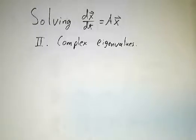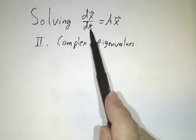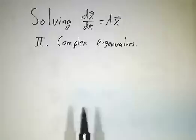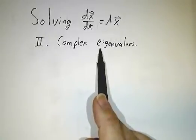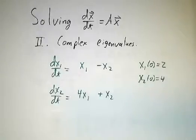In our last video, we studied systems of linear differential equations. Derivative of a vector is some matrix times that vector, and we studied the case where all the eigenvalues of the matrix were real. In this video, we're going to study the case where some of the eigenvalues are complex. And actually, we're going to do a 2 by 2 system where both eigenvalues are complex.